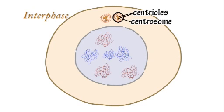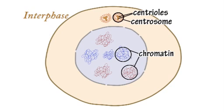At this stage, the chromosomes exist as loosely bundled coils, known as chromatin, which is not visible under a light microscope.